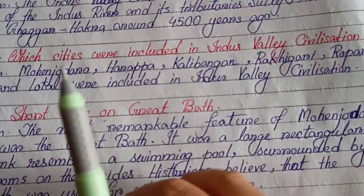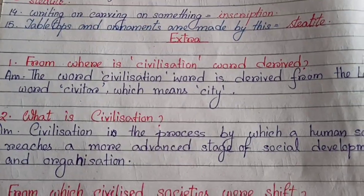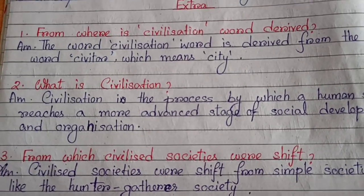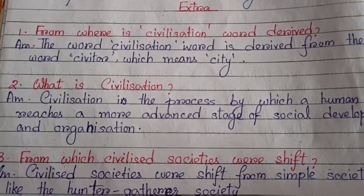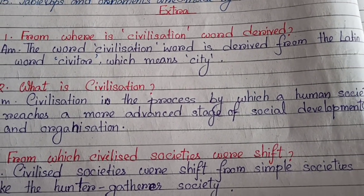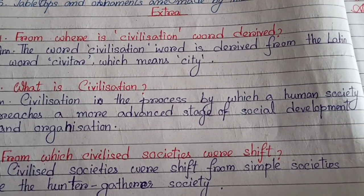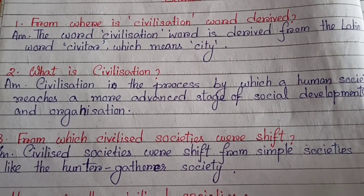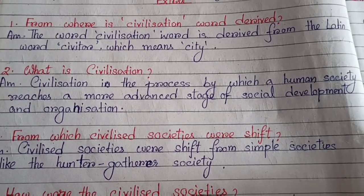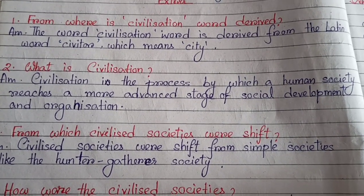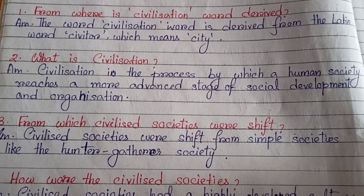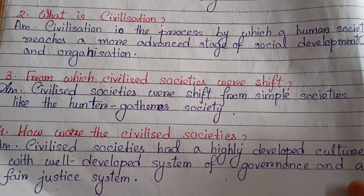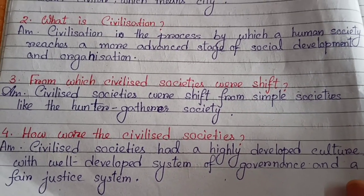Now we solve the question answers — both extra (inside) and exercise questions together. Number one: From where is the word 'civilization' derived? The word civilization is derived from the Latin word 'civitas,' which means city. Number two: What is civilization? Civilization is the process by which a human society reaches a more advanced stage of social development and organization.